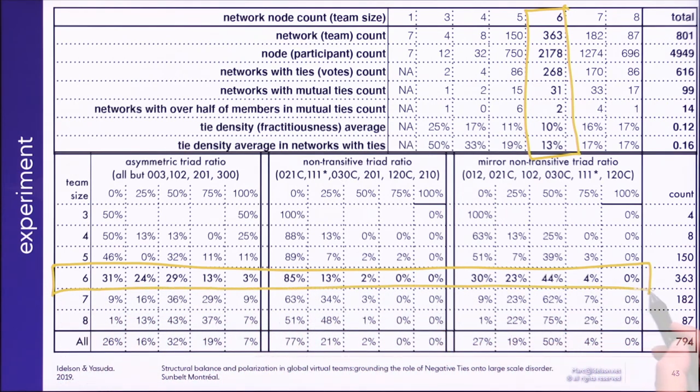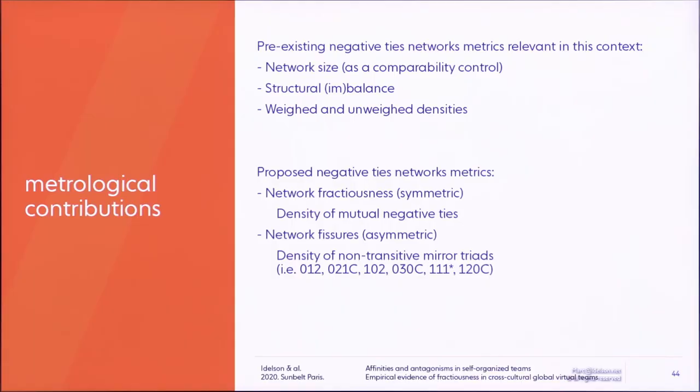So typically when we do social network analysis, we would focus on teams of the same size. We take the more numerous because network metrics can be tricky to compare across different team sizes. And what we notice here in the bottom is that for negative tie analysis, such as an exclusion vote, we need to define new metrics because the metrics that relate to positive tie networks don't make sense semantically speaking.